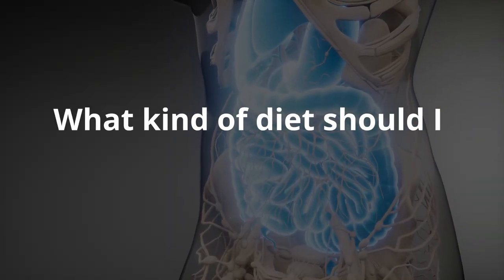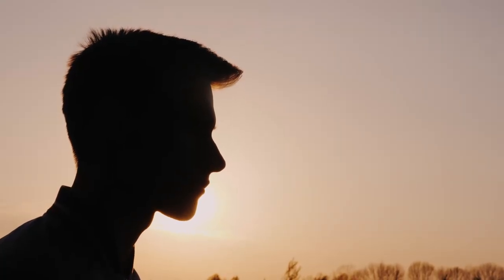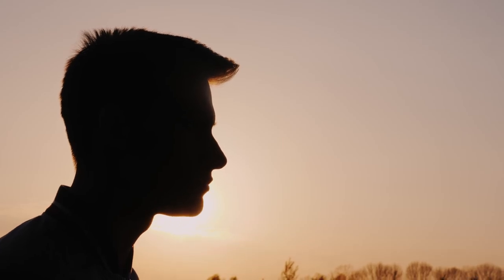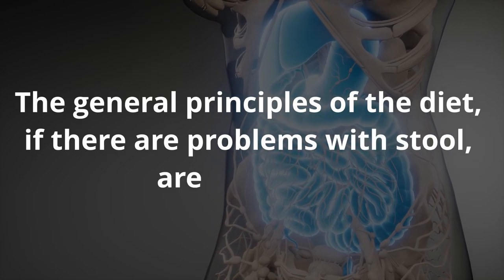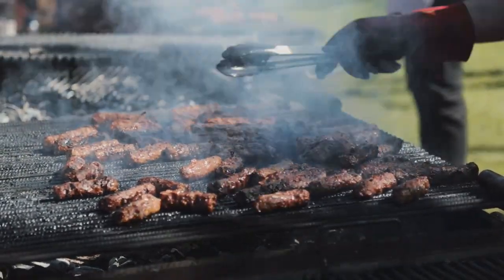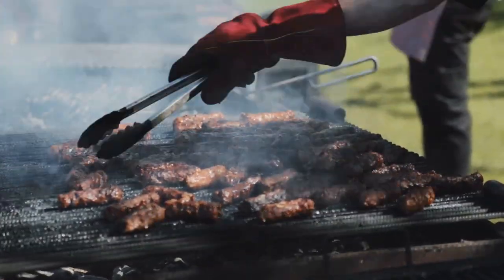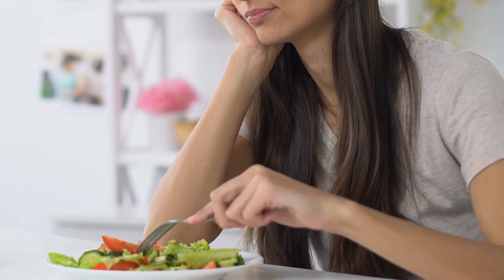What kind of diet should you follow to avoid stool problems? One of the most important things to eliminate constipation is what you eat. The general principles of the diet if there are problems with stool are: drink enough fluids — often the lack of water is the cause of difficulties with the intestines; use foods that are easy to digest; avoid heavy foods; follow the principle of sparing food; and eat through the day in equal portions 5 to 6 times.